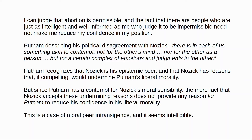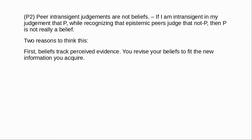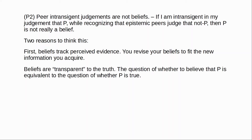The second premise of the argument was that peer intransigent judgments are not beliefs. That is, if I can be intransigent in my judgment that P while recognizing that many of my epistemic peers disagree about P, then P is not really a belief. Rowland argues first that beliefs track perceived evidence. The idea is that when you believe that P, then if you gain new evidence that bears on P, you must adjust your judgment regarding P in light of this new evidence — basically, you revise your beliefs to fit the new information that you acquire. Beliefs, Rowland says, are transparent to the truth. The question of whether to believe that P is equivalent to the question of whether P is true.